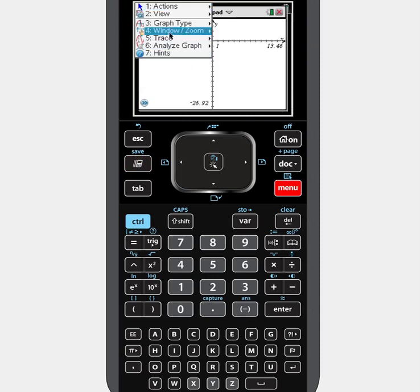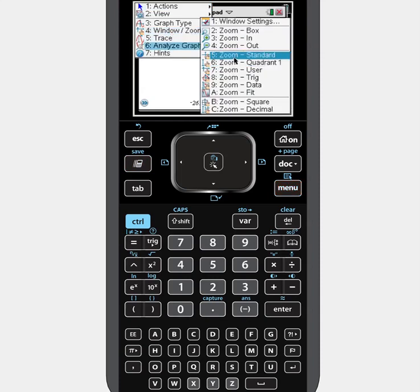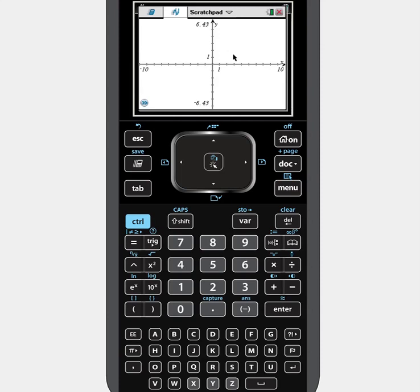So I'm going to hit menu, hit zoom, hit standard, and now your window is at your negative 10, positive 10 window like it would be when you bought it. Let's hit this button right here, show entry line. Type in x squared minus 7x minus 8 and see what that parabola looks like by hitting enter.